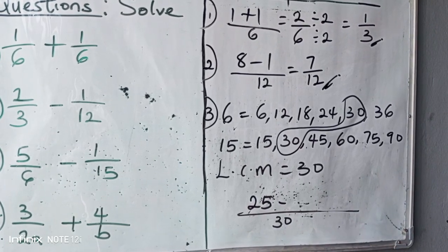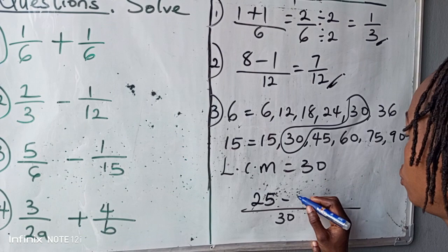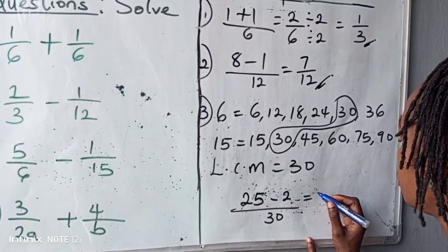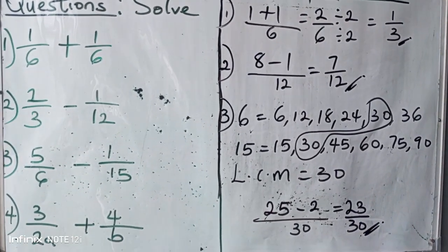How many fifteen can you find in thirty? Two. Two times one, two. So your answer will be equal to twenty-five minus two. We have twenty-three all over thirty. And this cannot be reduced anymore.